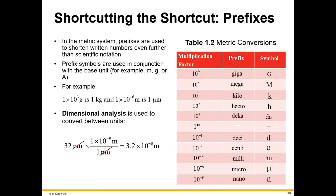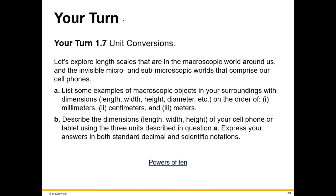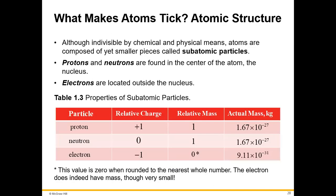In the metric system and in science in general, we use prefixes to tell how big or how small something is. For us in Chem 1115 — Chemistry and Society — you don't have to memorize these prefixes, but you will be memorizing them in future chemistry classes. There's an example here you can try on your own, but again, it's not memorized in this class.